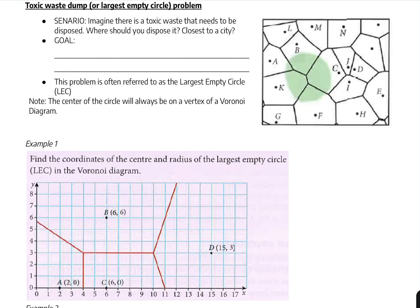In this video, we're going to talk about the main application of Voronoi diagrams, which is commonly called the toxic waste dump problem, or another way of saying it is we're trying to find the largest empty circle. We're going to imagine a scenario where there's toxic waste that needs to be disposed of. Where should we dispose it? Should we place it close to a city or furthest away? Obviously, we would like to place it as far away from cities as possible.